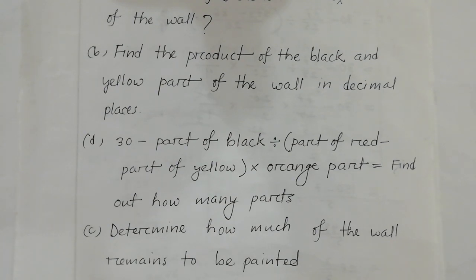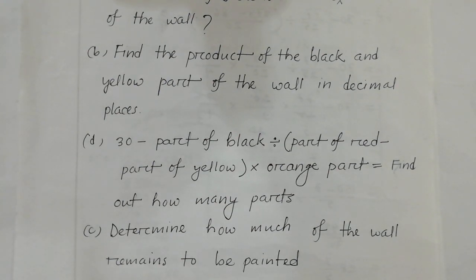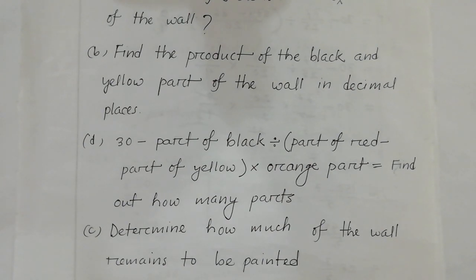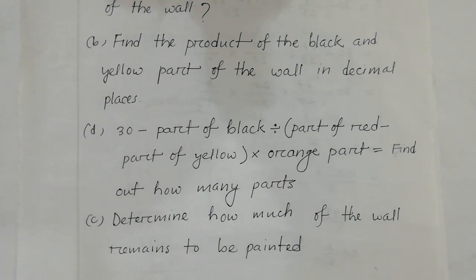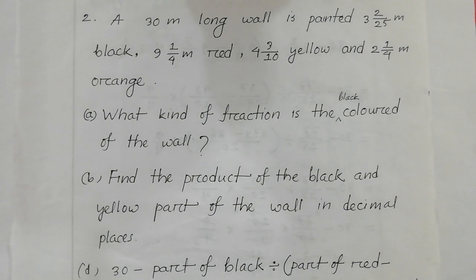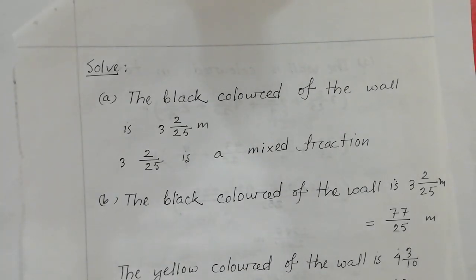Part of red minus part of yellow multiplied by orange part — find out how many parts. Also, what kind of fraction is the black color of the wall?